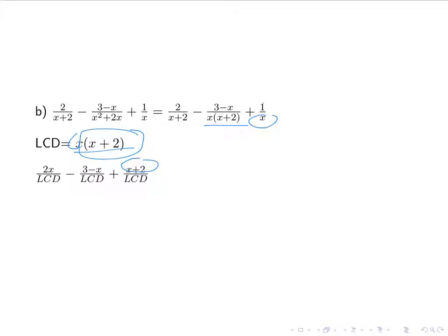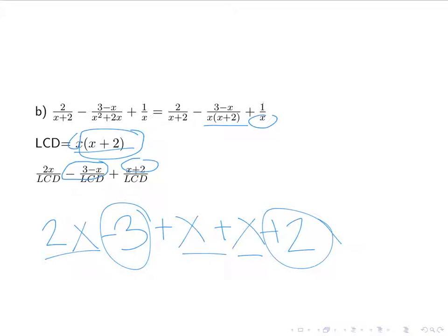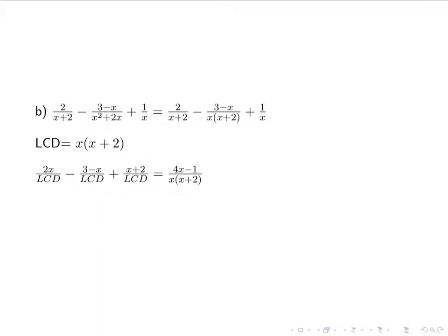I'm going to actually do out the addition. Notice that I'm subtracting this entire numerator. So I have 2x minus 3 plus x. I have a double negative there. Plus x plus 2. So I put all my x's together. I put my coefficients, my constants together. And I end up with 4x minus 1 over my LCD, which is x times x plus 2. I look at it, 4x minus 1, I can't simplify that, I can't factor that. Therefore, I can't simplify, and I'm done.